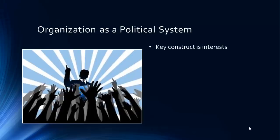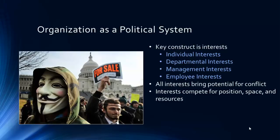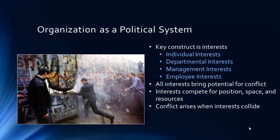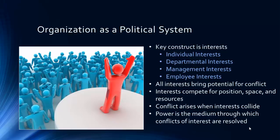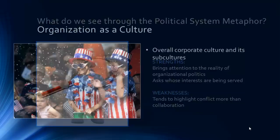We can also view an organization as a political system. A political system can be autocratic, democratic, and anywhere in between. The key construct is interests — individual interests, departmental interests, management interests, employee interests. All interests bring potential for conflict to the extent that interests can compete for position, space, and resources. Conflicts arise whenever interests collide; these can be personal, interpersonal, or between rival groups or coalitions. Power is the medium through which conflicts of interests are ultimately resolved — power influences who gets what, when, and how. A strength of this metaphor is that it brings attention to the reality of organizational politics by asking the question, whose interests are being served? A weakness is that it tends to highlight conflict more than collaboration.